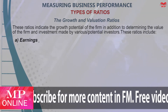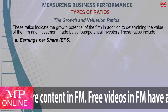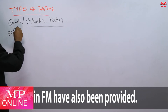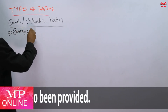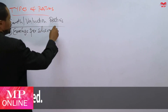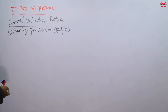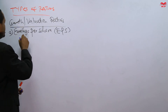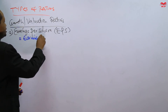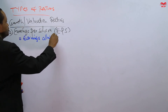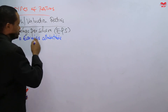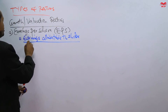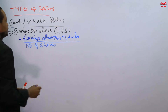These ratios include: number one, the earnings per share. The first ratio is the earnings per share, abbreviated as EPS. The formula is as follows: earnings per share is equal to the earnings attributable to shareholders, divided by the number of shares.